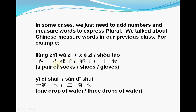For example: 两只袜子 (liǎng zhī wàzi) — two pairs of socks. You can see we add number, measure word, and the noun, so this is a plural. Other examples include 鞋子 (shoes) and 手套 (gloves). Another example: 一滴水 (yī dī shuǐ) — one drop of water — is singular. 三滴水 (sān dī shuǐ) — three drops of water — is plural. Number, measure word, and the noun: 三滴水.